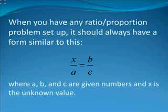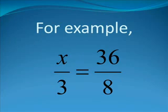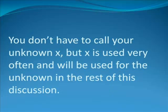Once you have any ratio proportion problem set up, it should always have a form similar to this: X divided by A is equal to B divided by C, where A, B, and C are given numbers and X is the unknown value. For example, X divided by 3 is equal to 36 divided by 8. You don't have to call your unknown X, but X is used very often and will be used for the unknown in the rest of this discussion.